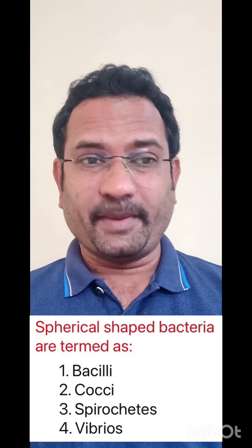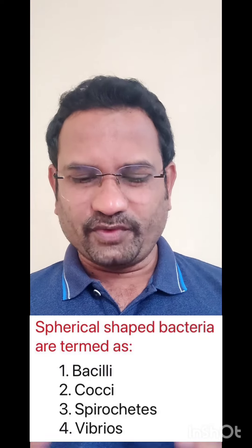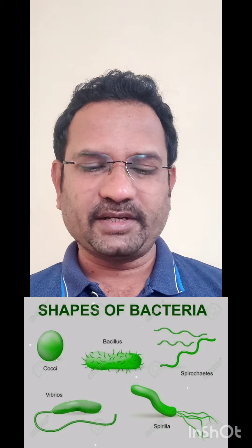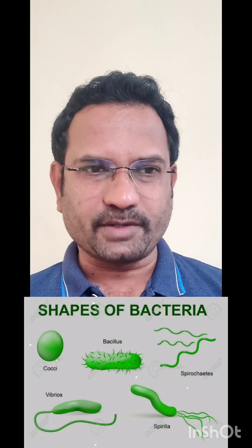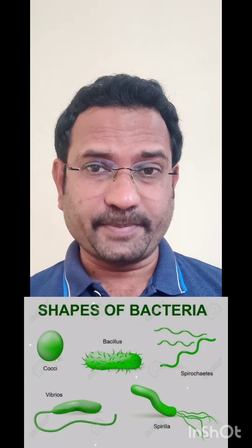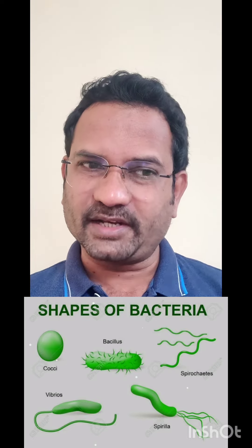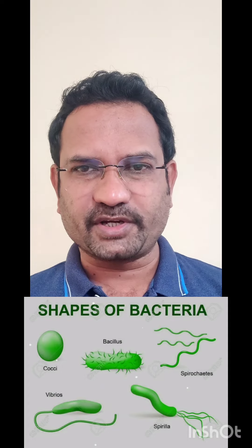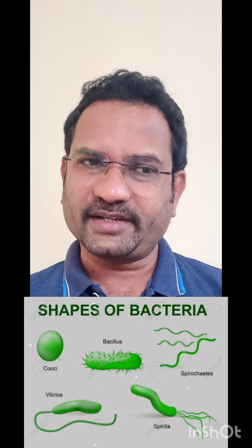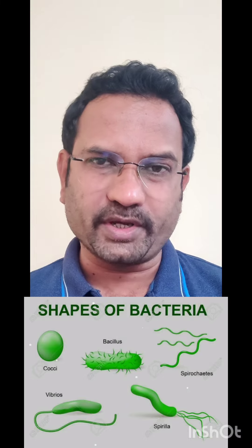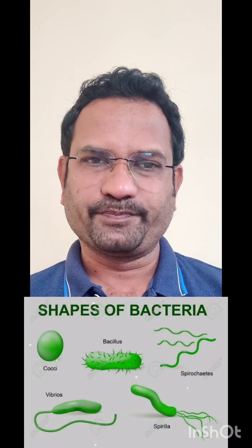Spiral-shaped bacteria are termed as? Morphological features give the names of bacteria. Bacilli bacteria are rod-shaped. Cocci bacteria are spherical-shaped. Spirochetes are spiral-shaped. Vibrios are comma-shaped. So spiral-shaped bacteria are spirochetes — option number two.